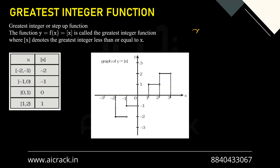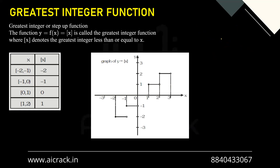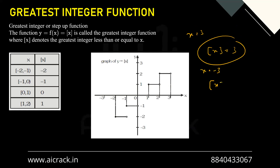Now if x = -3.5, all integers lesser than this are -4, -5, -6, -7, until minus infinity. So -4 would be the answer, not -3, because -3 is bigger than -3.5. It would return -4 for this input value. For any integral input value, the function returns that integer itself — so GIF(3) = 3 and GIF(-3) = -3.